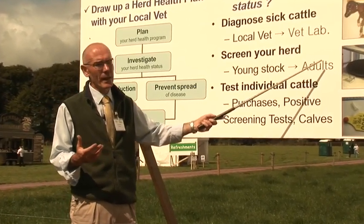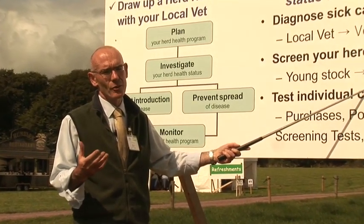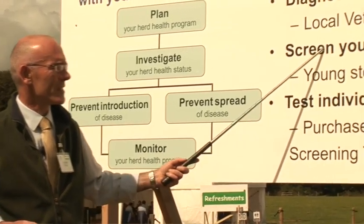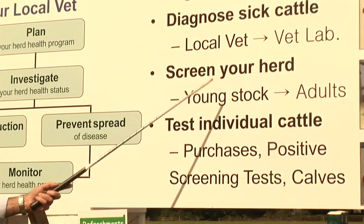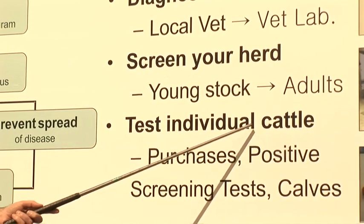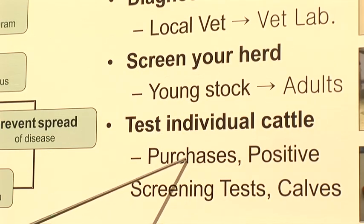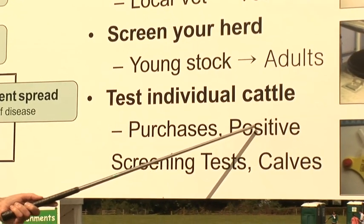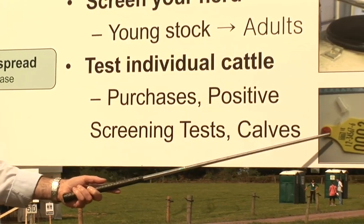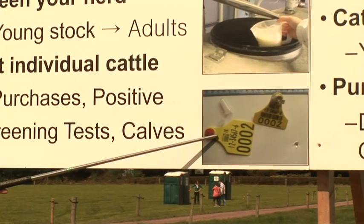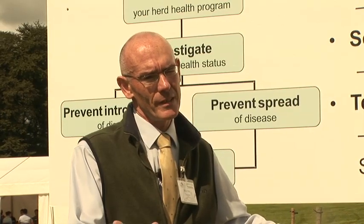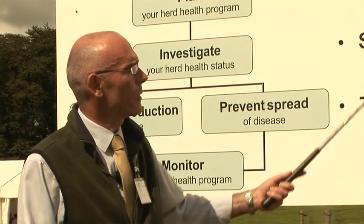If you're getting results back from laboratories, it's critical that you discuss these results with your local vet to interpret the findings specific to your farm. If the screening test indicates that there is an infection on your farm, your next step is to determine which individual animals on the farm are infected. To do this you test individual cattle. Critical cattle to test would be cattle you purchase, cattle that are positive from a screening test, and newborn calves. You can do this with milk, blood, or more recently there's an ear tag available that will allow you to take a sample from the ear of a newborn calf and tell you whether it's infected with BVD virus or not. This is how you determine your herd health status.